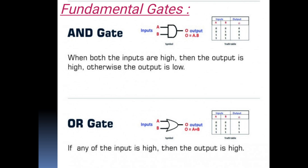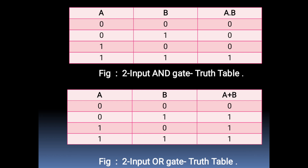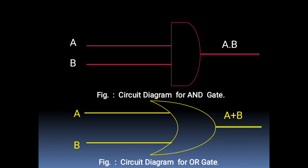Let me show you the truth table of the AND gate and the truth table for OR gate. These truth tables are the two input truth tables. Here A and B are the two input signals. In AND gate the output is A into B, and in the truth table of OR gate the output is A plus B. This is the circuit diagram for AND gate and here we can see the circuit diagram of OR gate. Here A and B are the two inputs and there is only one output, that is A into B.